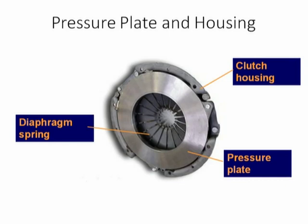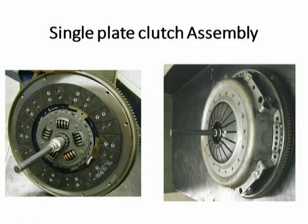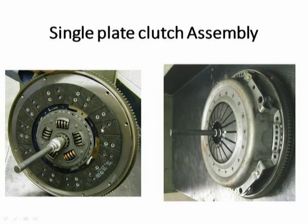Another assembly is the pressure plate housing, which comprises the clutch housing, pressure plate, and a diaphragm spring. Here, an assembly of a single plate clutch is shown where you can see the diaphragm spring, actuating rod, and push rod. On the back side, the figure shows the friction lining, the clutch assembly, and it comprises the torsional springs.